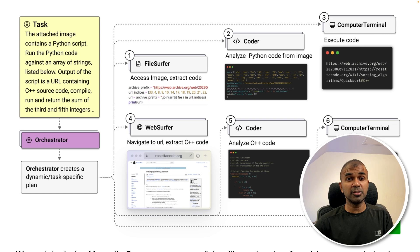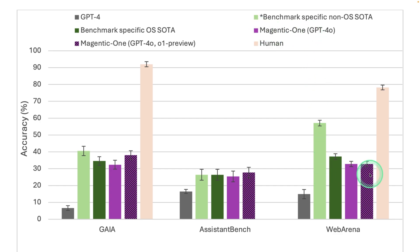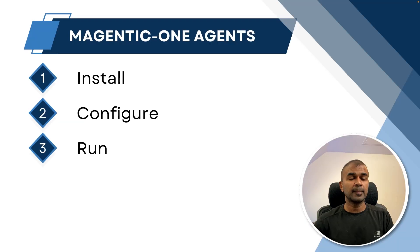This framework has everything built in, rather than you manually creating these agents and integrating all the features. You can see the chart showing human performance compared with AI agents — using Magentic-1, the performance is comparatively better than a normal large language model.